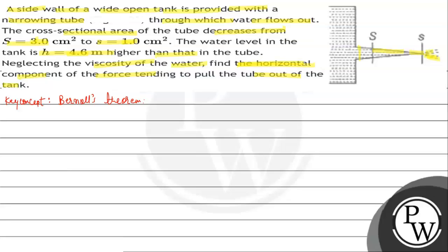Looking at the diagram: P_p is the pressure at point P, and P0 is the atmospheric pressure. We will consider the pressure outside and find the force on the nozzle tending to pull it out from the tank.